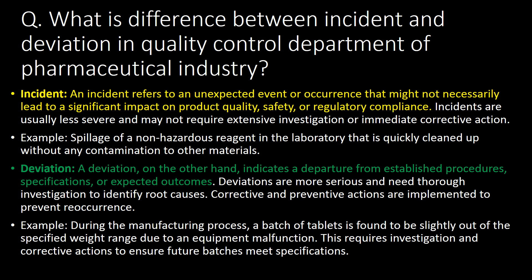A very frequently asked question: what is the difference between an incident and a deviation in the quality control department? An incident refers to an unexpected event or occurrence that might not necessarily lead to a significant impact on product quality, safety, or regulatory compliance. Incidents are usually less severe and may not require extensive investigation or immediate corrective action. An example of an incident is spillage of a non-hazardous reagent in the laboratory that is quickly cleaned up without any contamination to other materials.